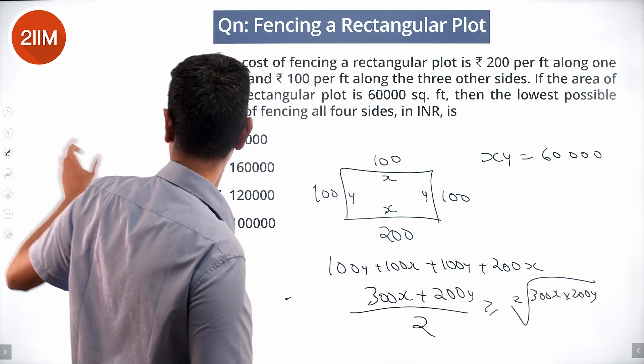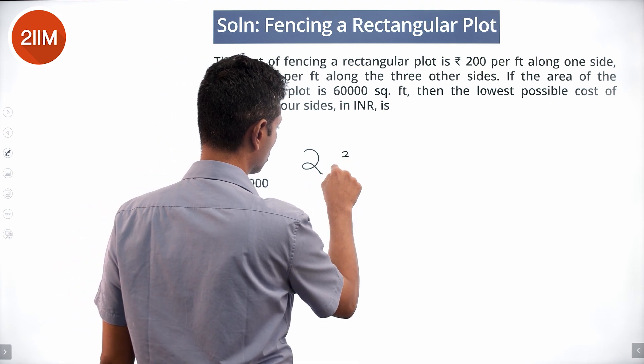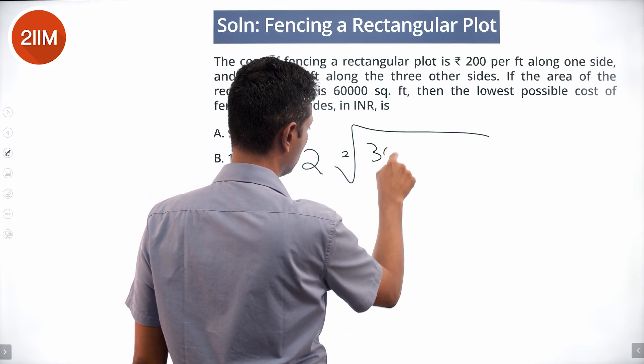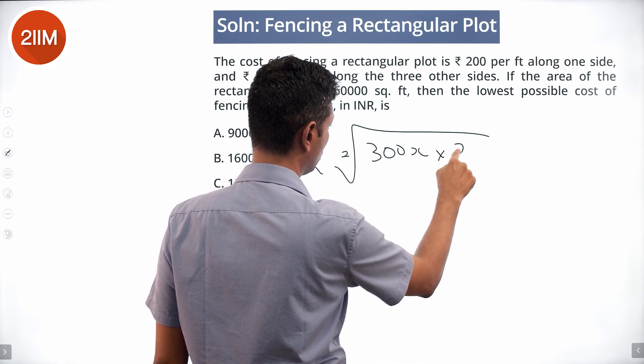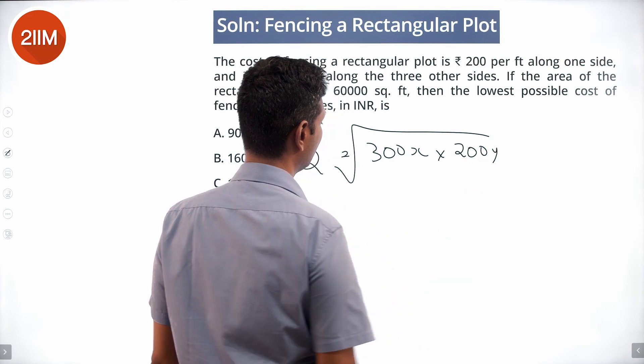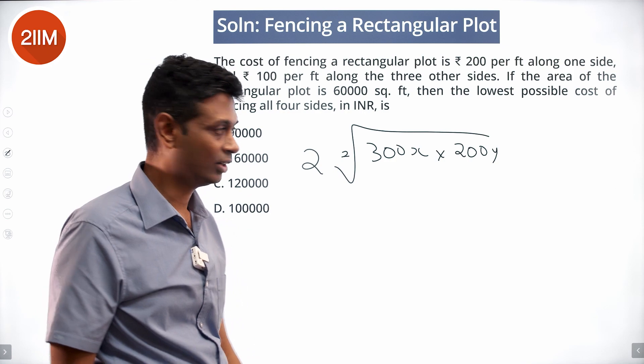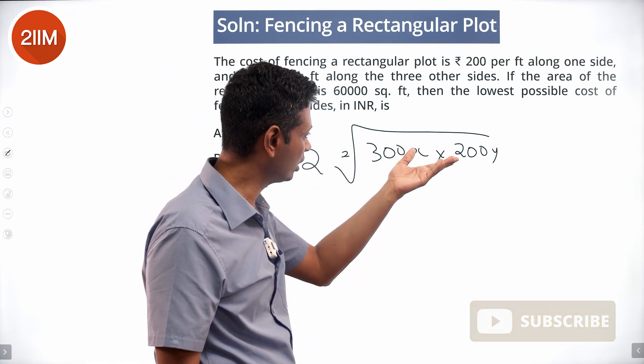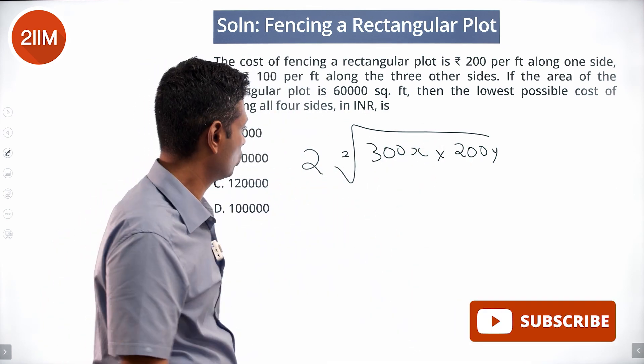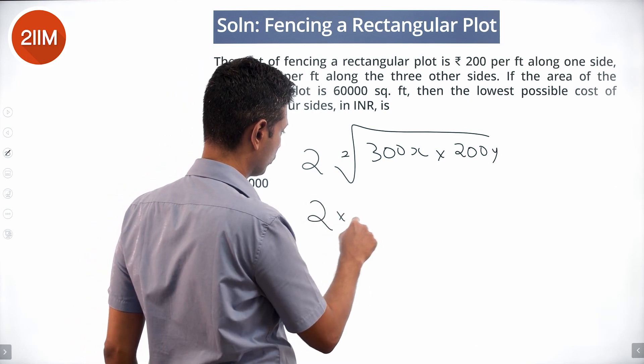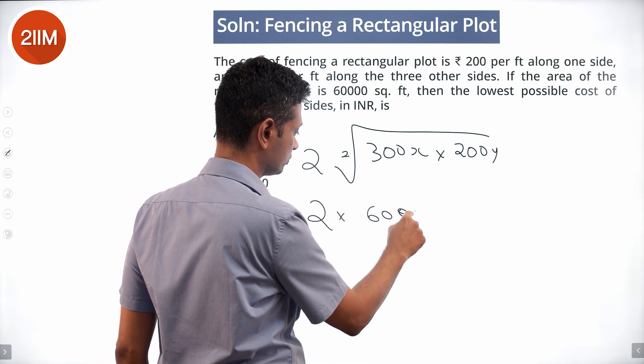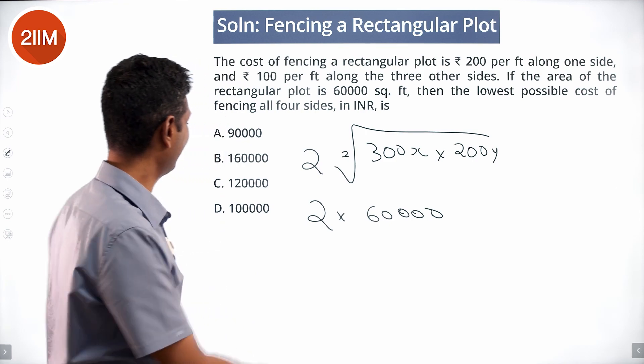We are looking for two times square root of 300X into 200Y. X into Y is 60,000, which is nothing but 300 into 200 into XY. This is two times square root of 300 into 200 into 60,000, which is two times 60,000, or 120,000.